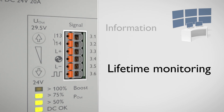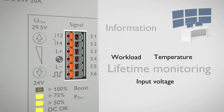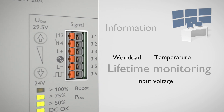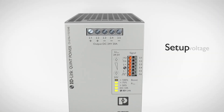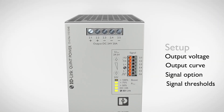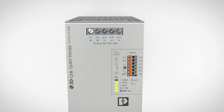For example, the service life monitoring for predictive maintenance, considering utilization, input voltage and temperature. Parameterization via IO-Link saves time during device replacement and avoids user errors.